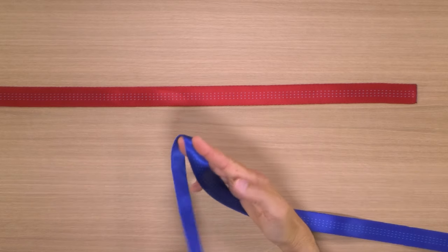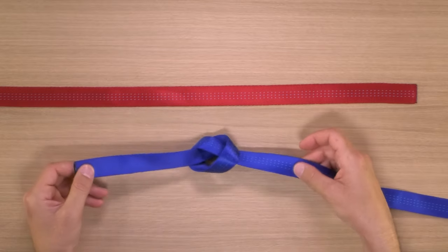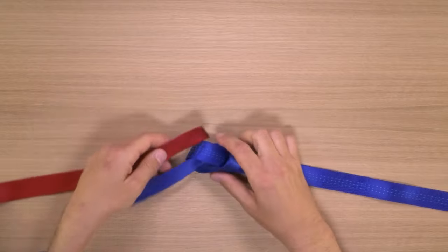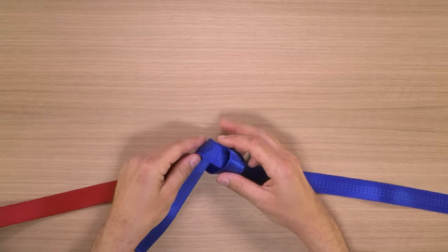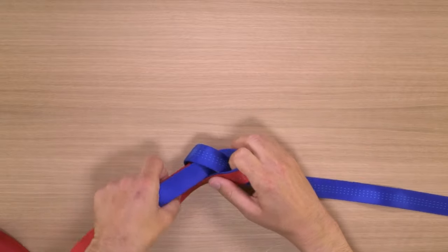To tie a water knot, which is a great way to link two pieces of flat material like webbing, first make an overhand in one piece of material. Then starting from the end of that piece, retrace that overhand with the other and make sure you leave an adequate amount of tail on each end.